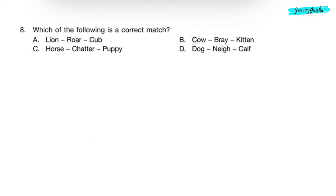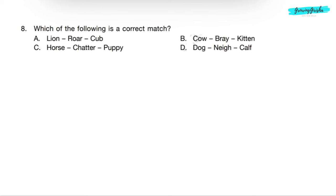Question 8: Which of the following is a correct match? Let's see the options. Option A: Lion. Sound of lion is roar and its young one is cub. So option A is the correct answer.